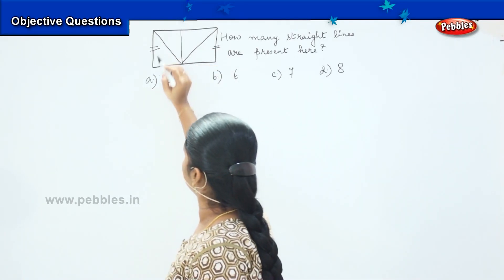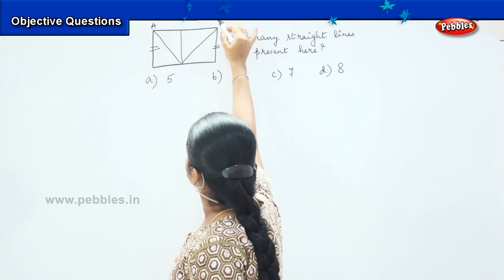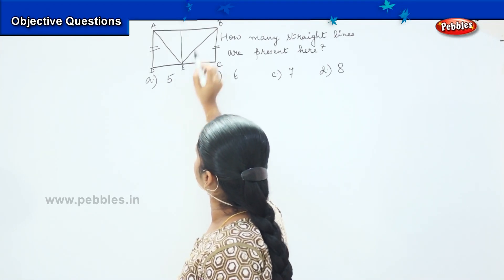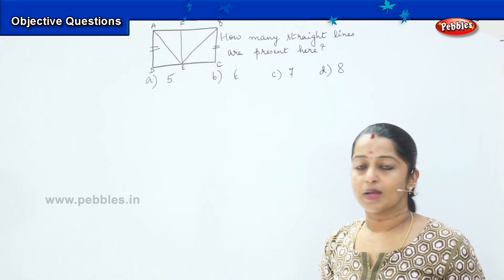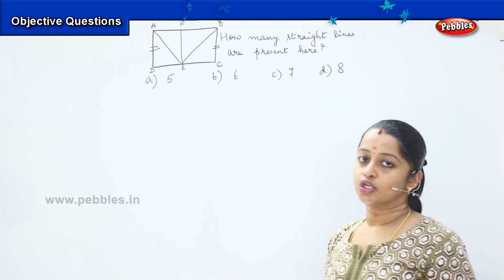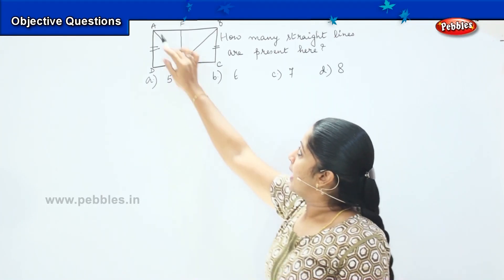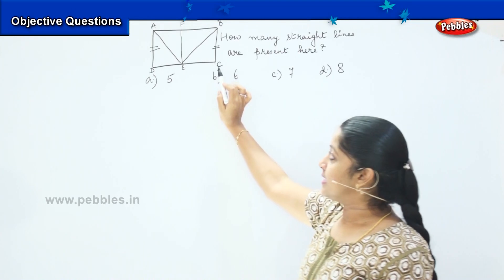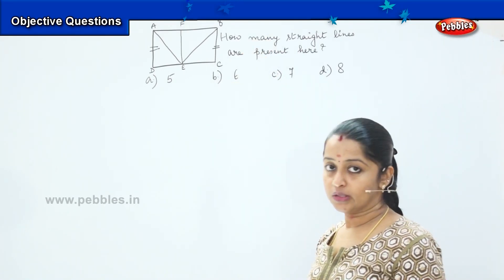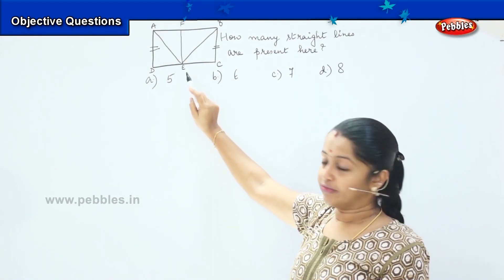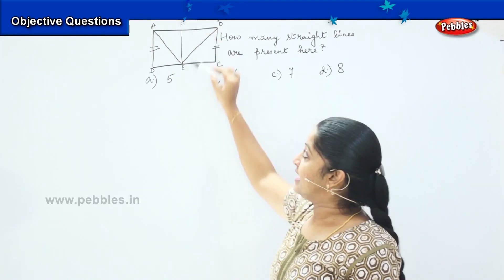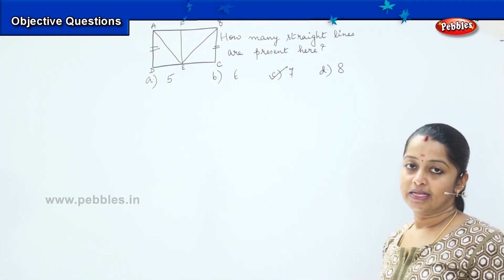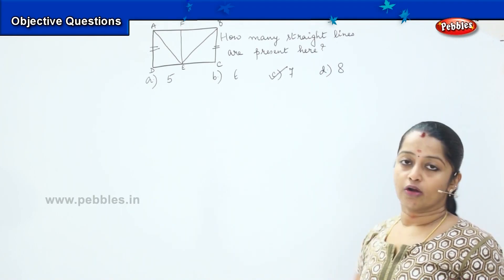Do you want me to repeat? I will name the lines with alphabets so you understand better. AB is my first line, AD is my second line, DC is my third line, BC is my fourth line, AE is the fifth line, BE is the sixth line, and EF is the seventh line. So what is the right option? It is option C: seven. There are seven straight lines involved in this diagram.